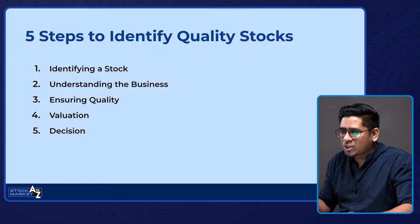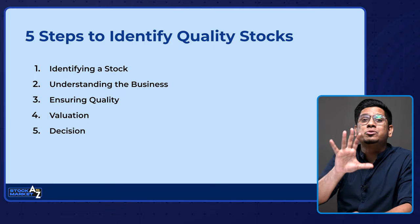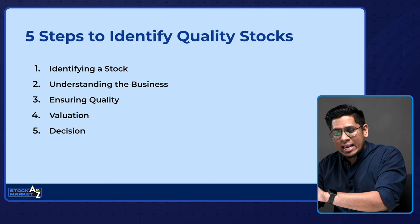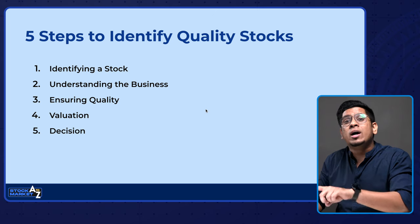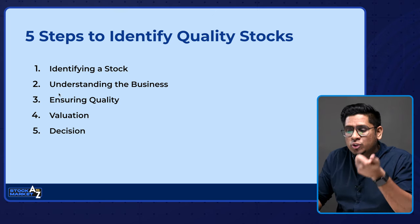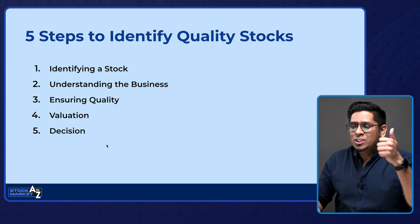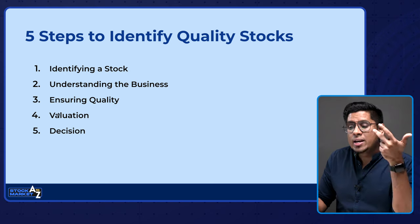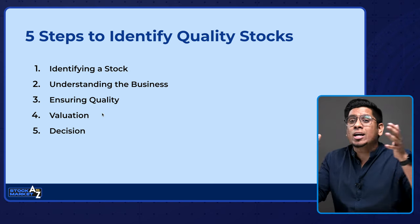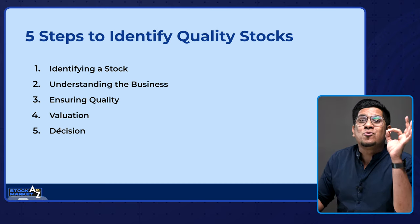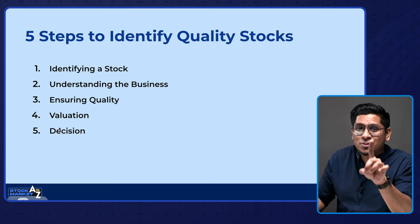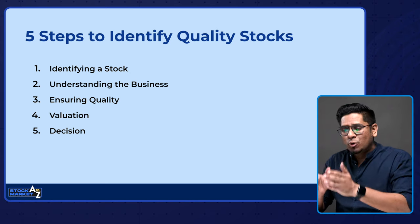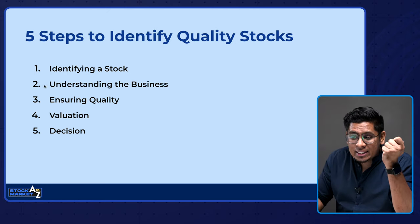So this is the core slide: how to find good quality stocks. The five steps are: first, identify the stock itself; second, understand the business of the company you identified; third, ensure quality — ensuring that the company is actually a high quality, investable company; fourth, value the company — do the valuation, which we'll learn today; and fifth, take the decision whether or not to invest into the company.